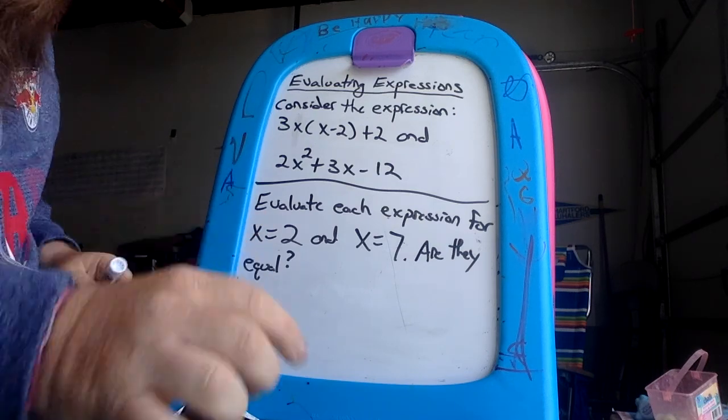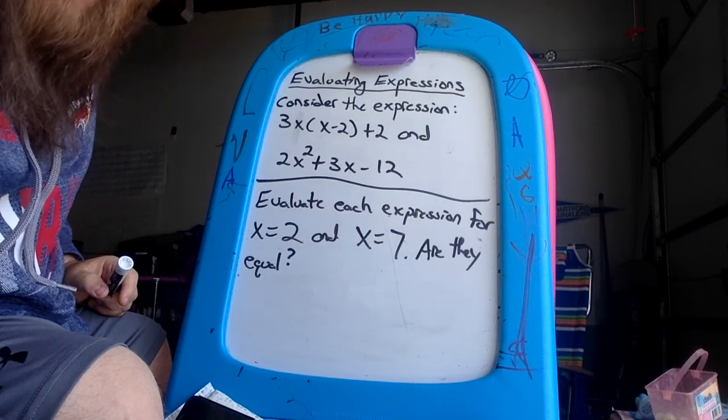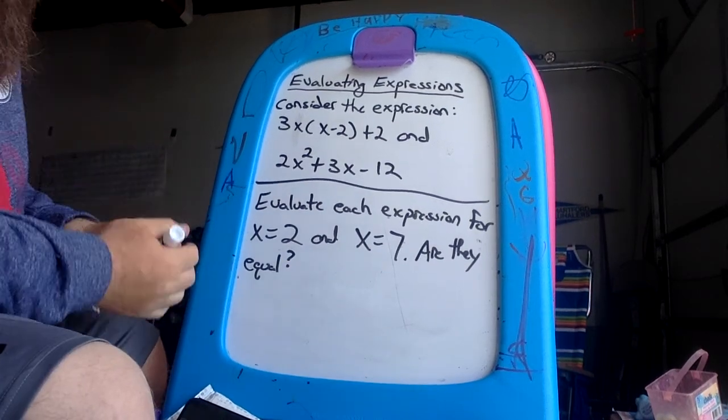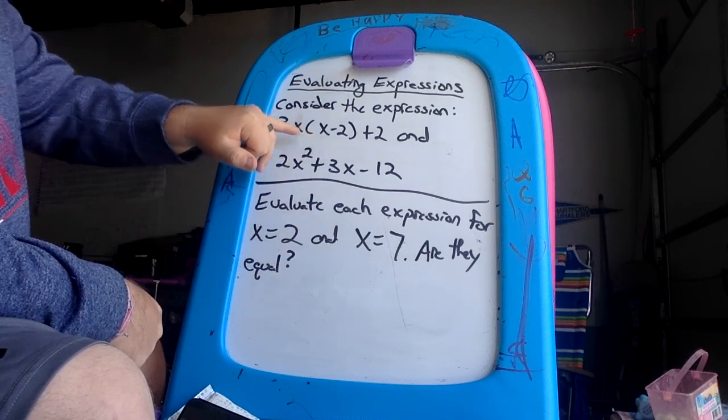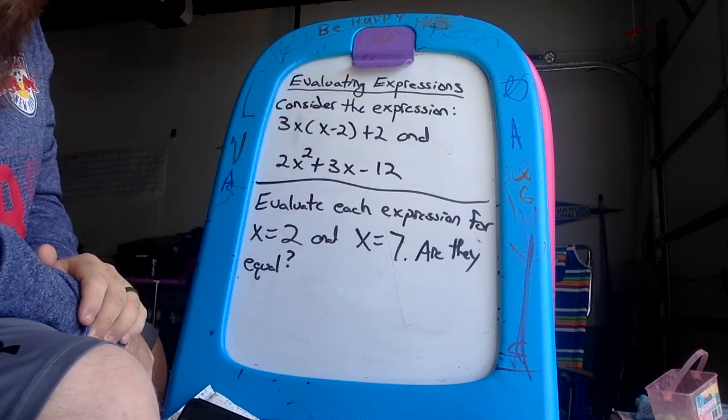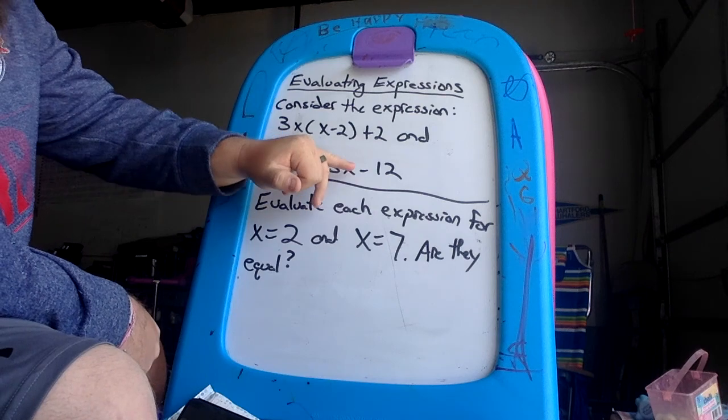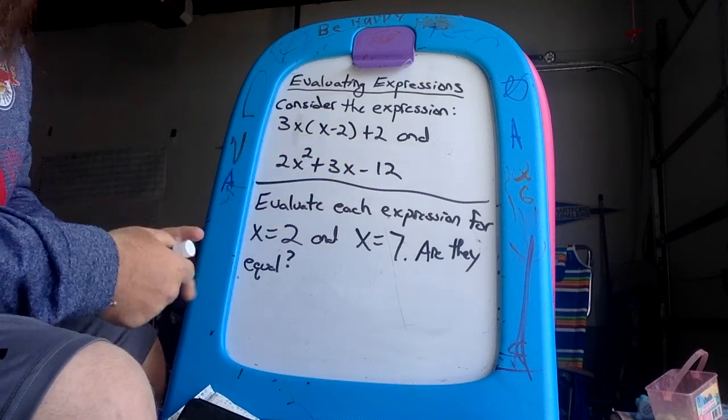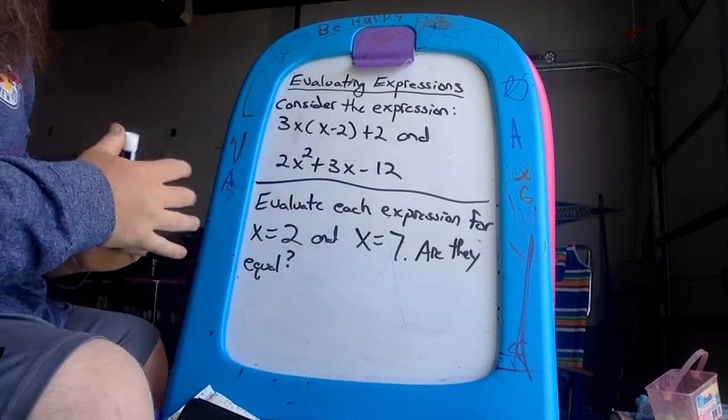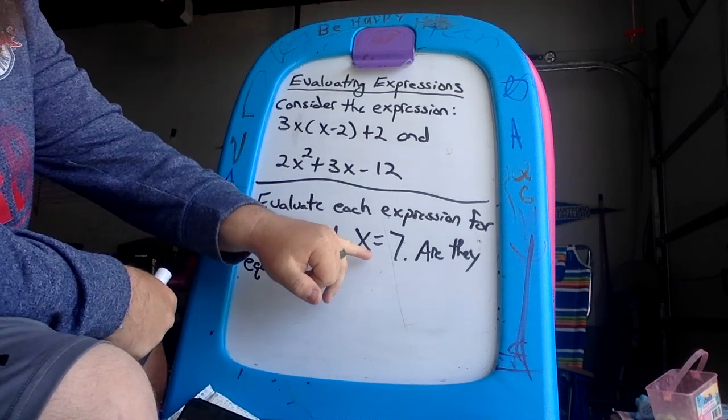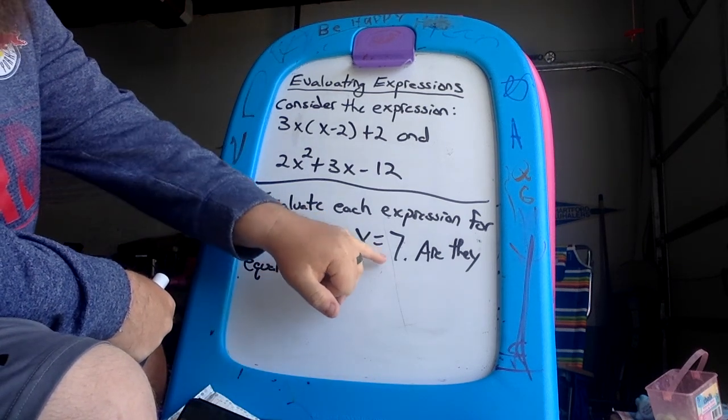As you guys are looking at this, we're going to take the 2 and put it in place of all the x's you see here. And then I want you guys to do the same thing for the second equation. And then as you guys are doing that, you're gonna do the same thing with the variable 7 and x.